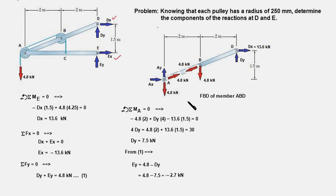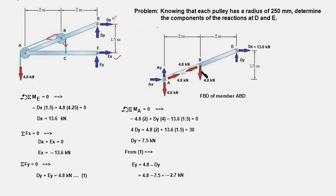Here is the FBD of member ABD — we could have taken the other member, but we opted for this one. Notice that we have removed the pulleys from member ABD. When we remove the pulleys, the tension force in the cable acting on each pulley gets shifted parallelly to the center point. Each shifted force is 4.8 kilonewtons — one parallel to the vertical cable from B to C, and one parallel to the direction B to A. The tension is the same throughout because it is a single cable.